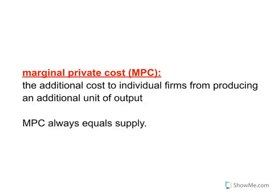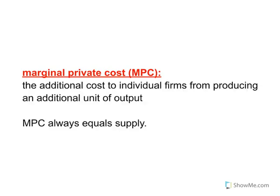The counter to marginal private benefit is marginal private cost — the additional cost to individual firms from producing an additional unit of output. Marginal private cost is what we've been referring to as marginal cost in the past. It's always equal to supply. Remember back in unit six when we did the perfectly competitive firm's supply curve — that's effectively what we were talking about. So it's really just different phrasing for terms we've already encountered in past units.